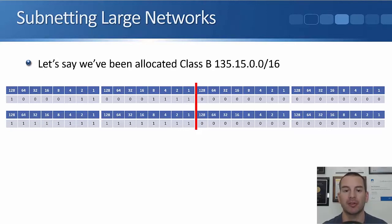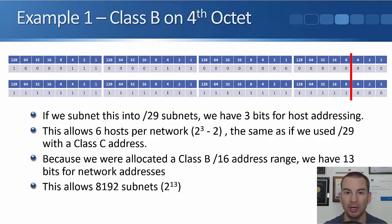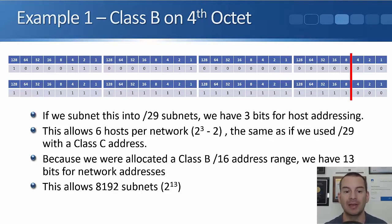For our first example, we've been allocated a class B. The IP address is 135.15.0.0/16 — that's our network address. If we subnet that into /29 subnets, we're going to have three bits for host addressing, because 32 minus 29 gives us three bits. That will allow six hosts per network, because 2 to the power of 3 is 8, minus 2 gives us six hosts. A /29 gives us six available hosts per network whether we're using a class A, B, or C.